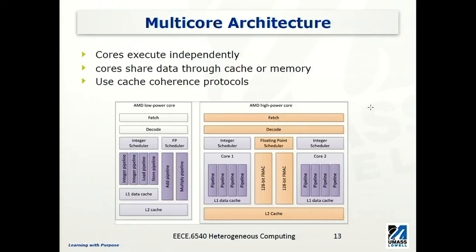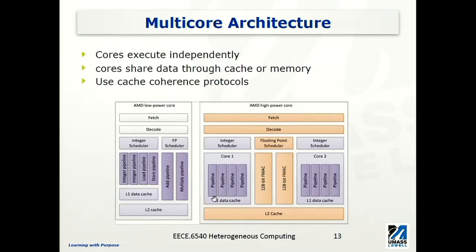We can have multiple cores on the processor. For example, the figure on the right is an example of an AMD high-power processor which has two cores. These two cores share some components — for example, instruction fetch, decode, floating point scheduler, floating point multiplier and accumulation unit, and also some cache memories like level 2 cache. But within these two cores, each one has its own pipeline and level 1 data cache, and they operate independently while sharing those other units.